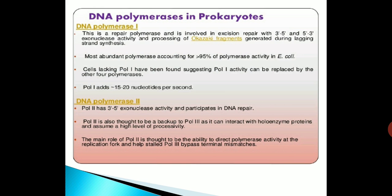DNA polymerase 2 has 3-prime to 5-prime exonuclease activity and participates in DNA repair. Pol 2 is also thought to be a backup of Pol 3, as it can interact with holoenzyme proteins and assume a high level of processivity. The main role of Pol 2 is thought to be the ability to direct polymerase activity at the replication fork and help Pol 3 bypass terminal mismatches.